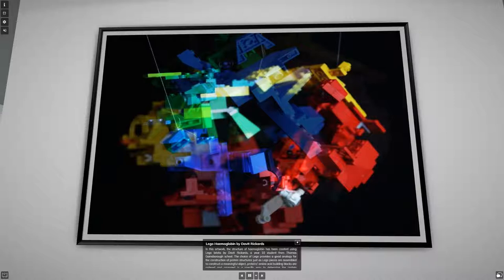In this artwork, the structure of haemoglobin has been created using Lego bricks by David Rickards, a Year 10 student from Thomas Gainsborough School. The choice of Lego provides a good analogy for the construction of protein structures. Just as Lego pieces are assembled to construct a meaningful object, proteins amino acid building blocks are ordered and arranged in a specific way to determine the protein structure. David says that these Lego bricks also represent the coming together and building of our knowledge of these tiny yet significant structures.